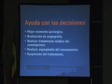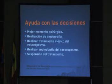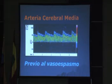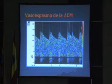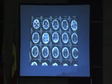El Doppler transcraniano en hemorragia subaracnoidea ayuda a tomar decisiones: a saber en qué momento se va a operar al paciente, cuándo se puede hacer una angiografía cerebral, cuándo se inicia el tratamiento médico del vasospasmo, cuándo se puede hacer una angioplastia cuando es vasospasmo severo, y cuándo se suspende el tratamiento. Estos son cinco ítems importantes para las decisiones terapéuticas. A pesar del reconocimiento temprano con Doppler, hay muchos pacientes que igualmente se infartan.